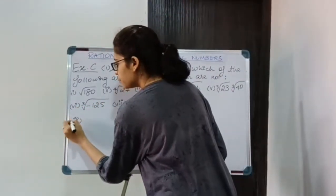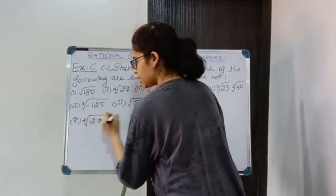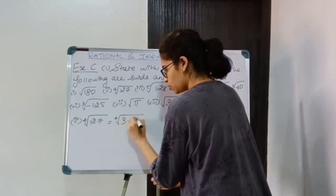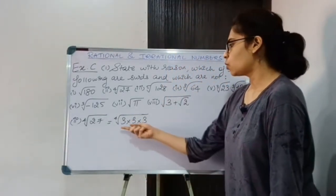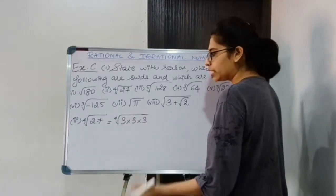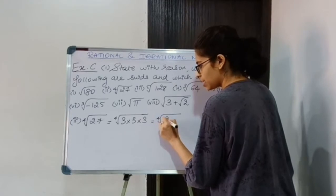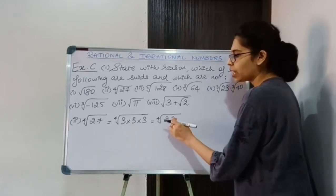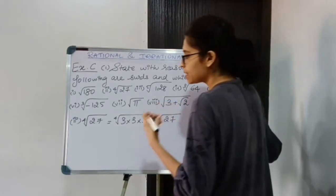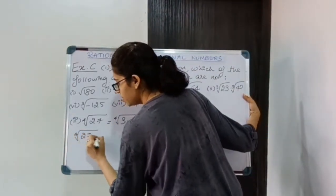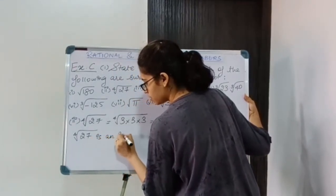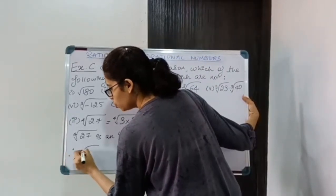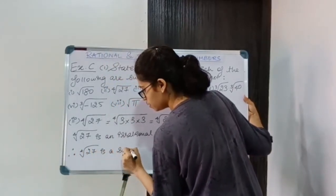Moving on to the second number: it is the 4th root of 27. Factorizing 27: 3 × 3 × 3. I cannot remove the 4th root, so it remains as is. It is the root of a number, and I am going to get an irrational value. Inside the root I have a rational number. So yes, it is a surd. Therefore, ⁴√27 is a surd.